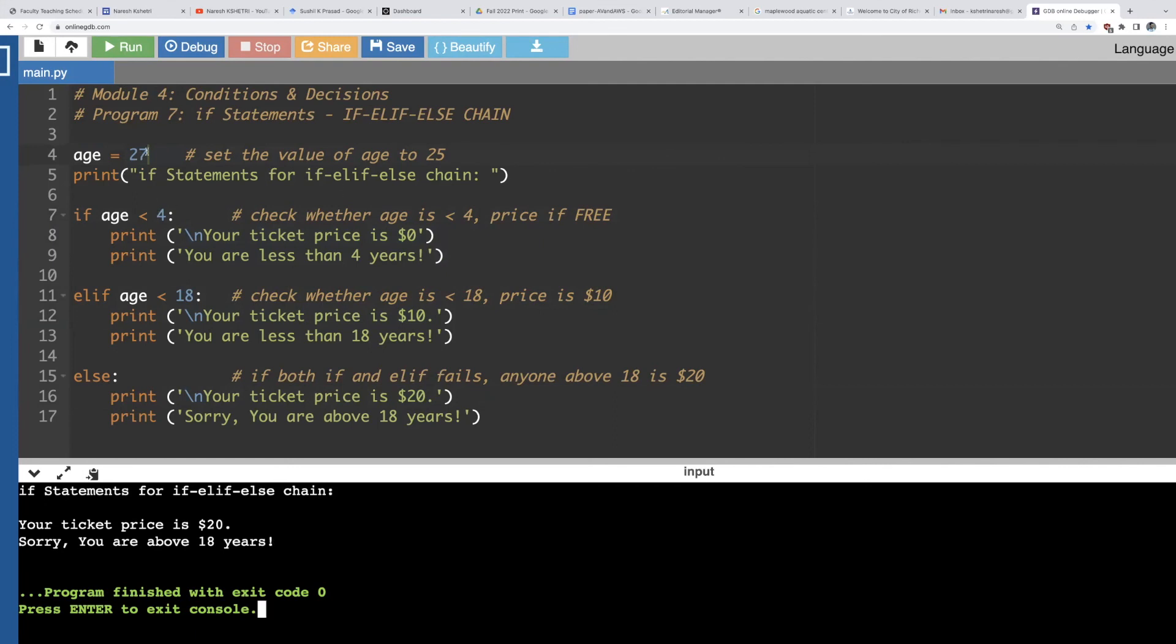So you can change this age variable to anything or you can set it, check for example two and run again and you see the ticket price is zero as per our condition set